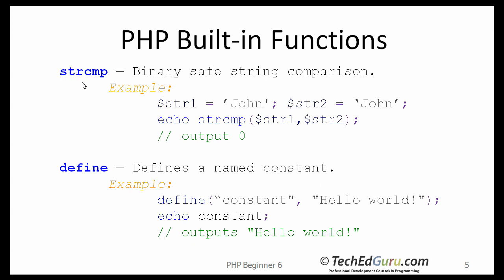The strcmp (string compare) function does a binary compare on two strings. In this case, if you have two identical strings, you expect the result to be 0, because there is no difference between the two strings.